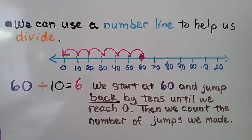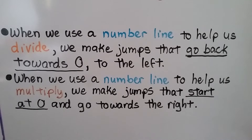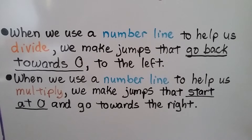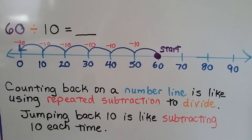When we use a number line to help us divide, we make jumps that go back towards 0, to the left. When we use a number line to help us multiply, we make jumps that start at 0 and go towards the right. Counting back on a number line is like using repeated subtraction to divide — jumping back 10 is like subtracting 10 each time.